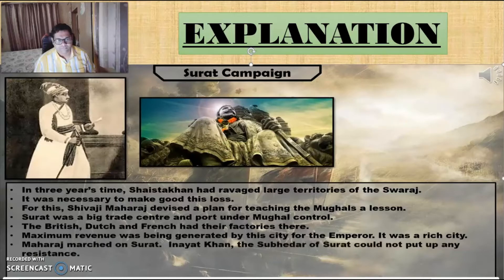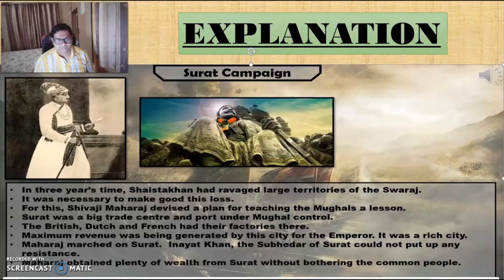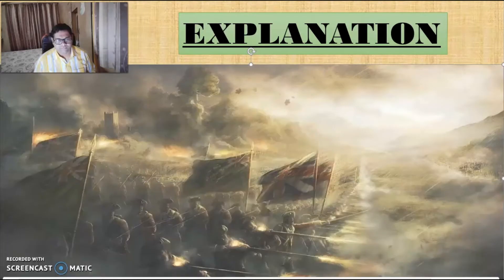Shivaji Maharaj decided to march to Surat. Inayat Khan, the subadar of Surat, could not put up any resistance to Shivaji Maharaj. Maharaj obtained plenty of wealth from Surat without bothering the common people. His campaign of Surat was completely successful.